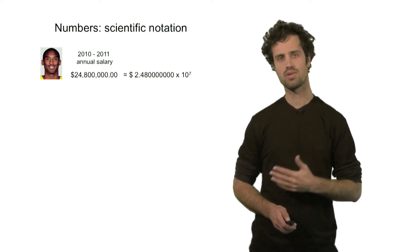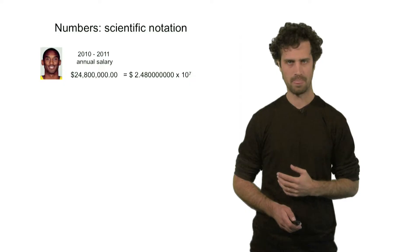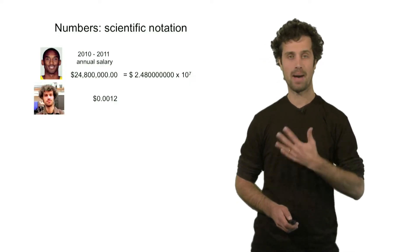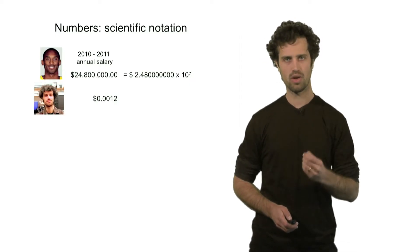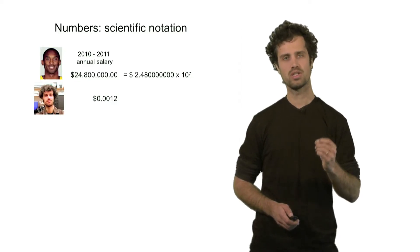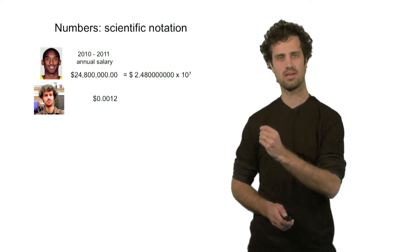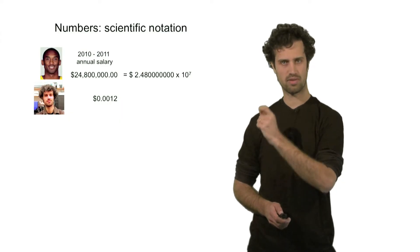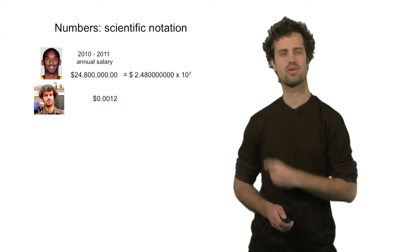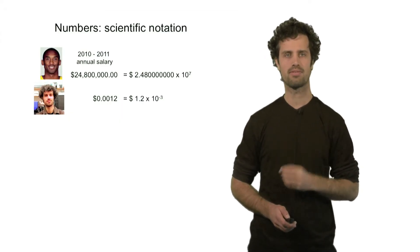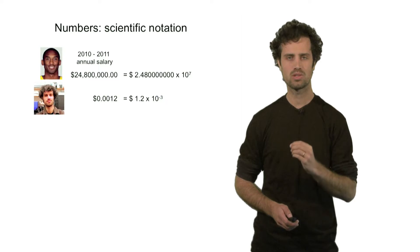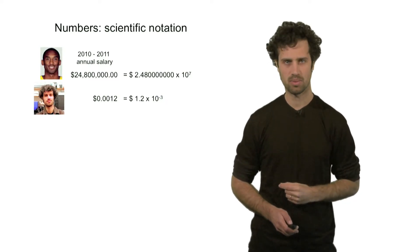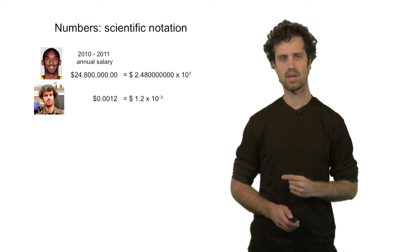This is what you do for numbers that are larger than 1. For numbers that are smaller than 1 — for instance, my annual salary — you do the following: you move the decimal point to the right. In this case, you move it over three places to arrive at the position of the first non-zero digit. So here I have 1.2 times 10 to the minus 3, because I moved the decimal point three places to the right.